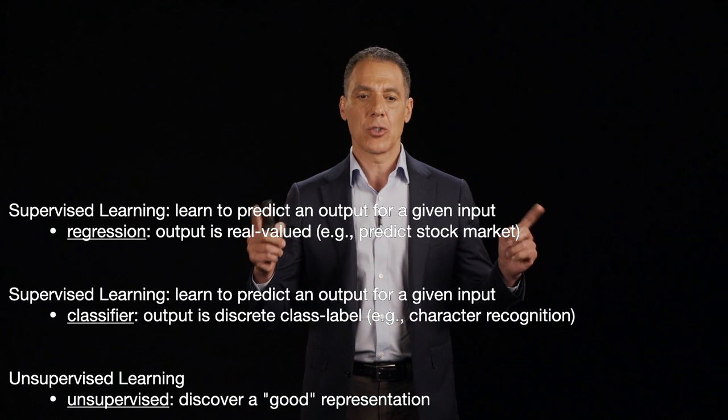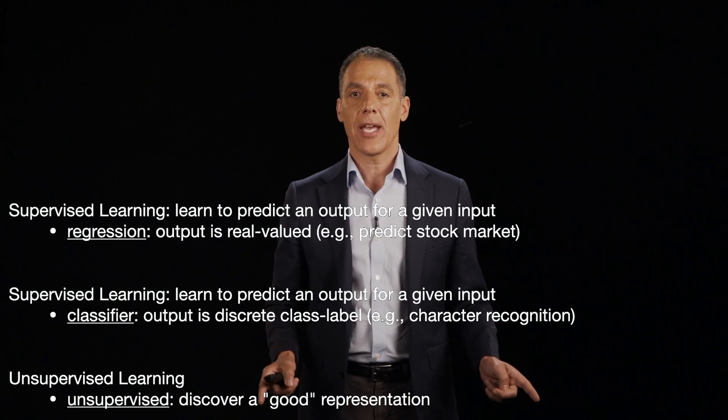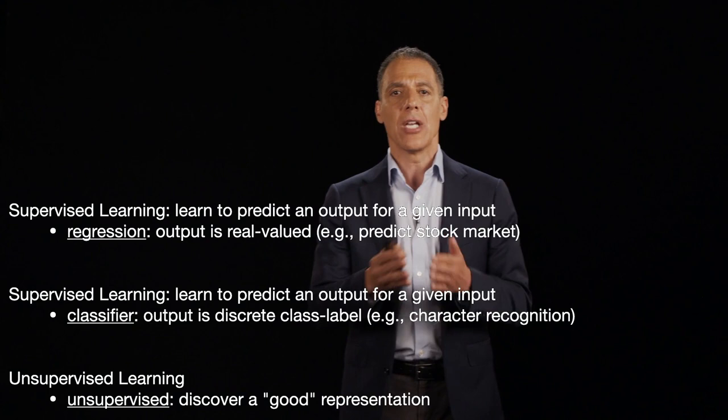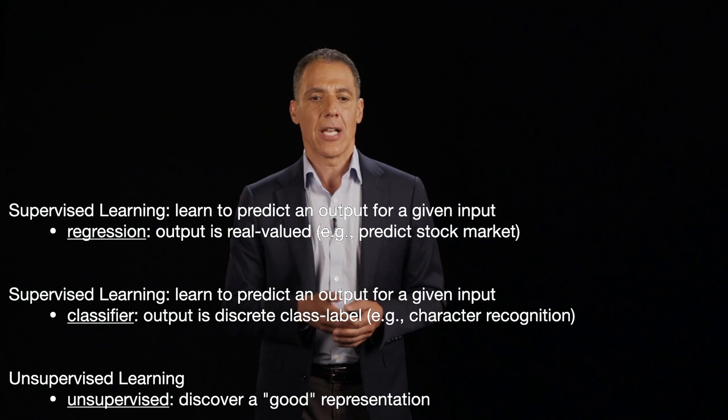We're going to talk about three aspects of image understanding: supervised learning in terms of regression, supervised learning in terms of classification, and unsupervised learning. There's a third aspect called reinforcement learning, which we will not be covering in this class. So let me talk briefly about what these three are, because this is going to take up the rest of the semester.